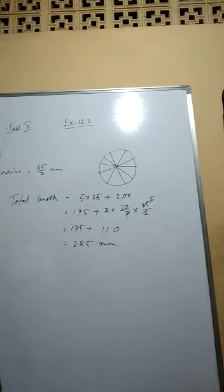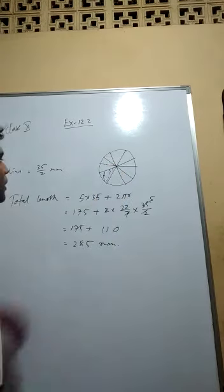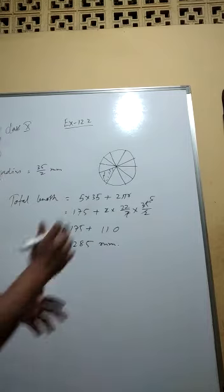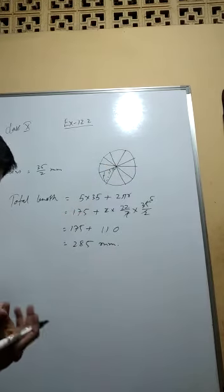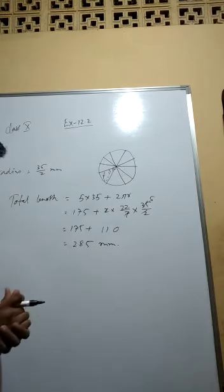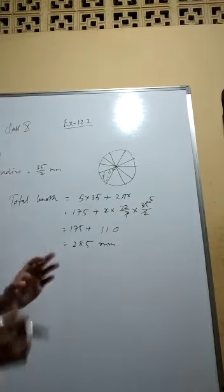And next one, the area of each sector of this brooch. That means area of each sector. I am taking this one. So area of sector, if we are going to find out, then the angle is required. It is obviously required. But radius we know, that is 35 by 2 millimeter. But angle is also required. So how to find out this angle?